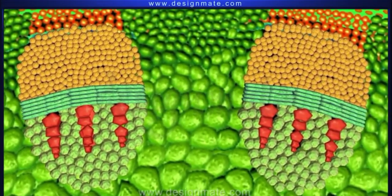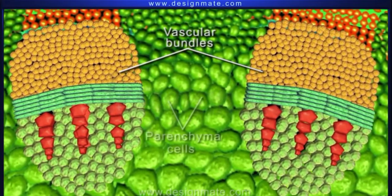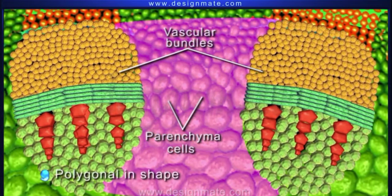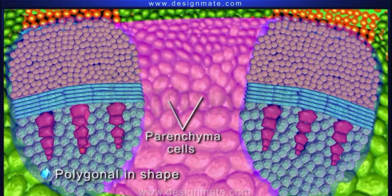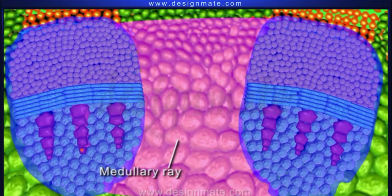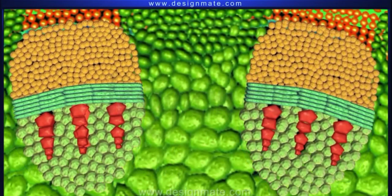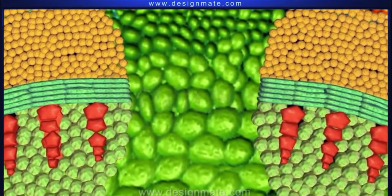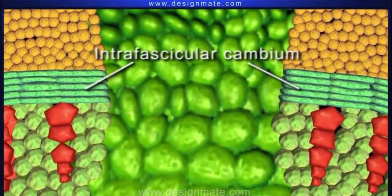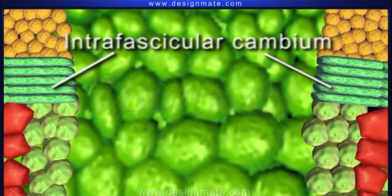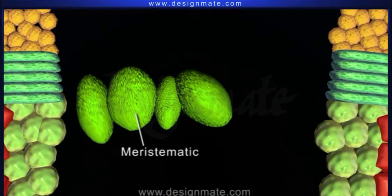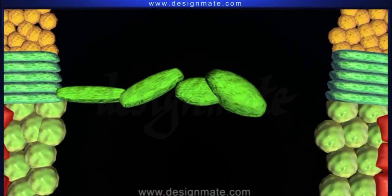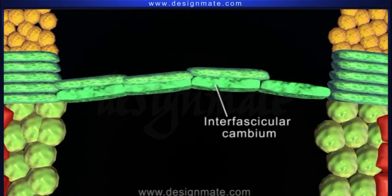In between the vascular bundles, there are some parenchyma cells which are polygonal in shape and constitute the medullary rays. As the dicot plant grows and matures, some of the medullary ray cells, mostly in line with the intrafascicular cambium, become meristematic and divide to form a strip of interfascicular cambium.